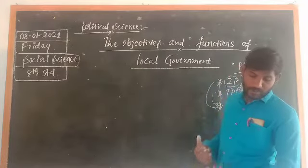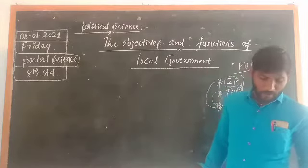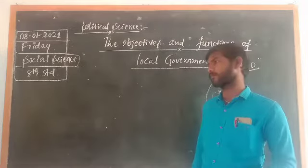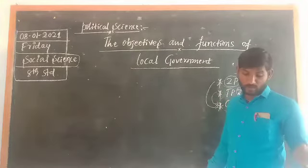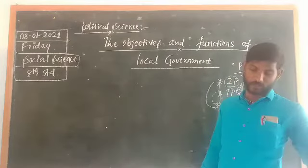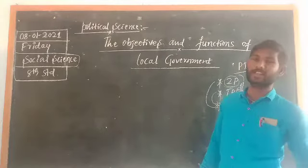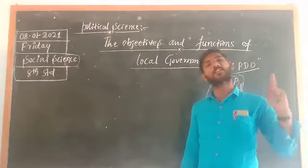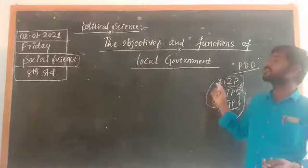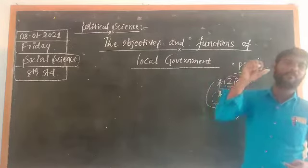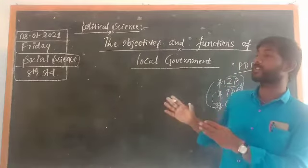The next function is to encourage and implement primary, secondary, and adult informal educational programs. The local government takes more care about education — not only for primary students, not only for secondary students, but for all students entirely. Primary, secondary, adult, and children should all receive informal education programs by the local government. This is a major function of the local government, and dear students, you should know about this because it is a very essential part of your future life.